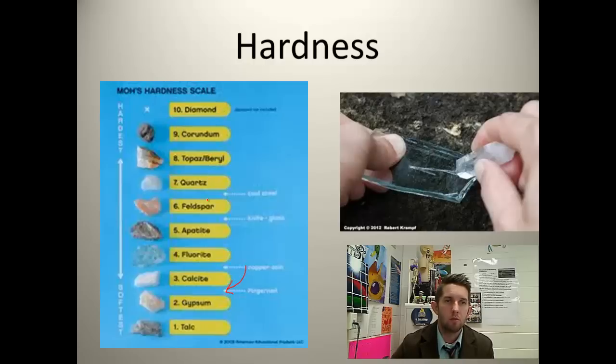Corundum, topaz, quartz, feldspar. Talc will get scratched by all of these. So it's kind of in succession. Diamond will scratch corundum. Corundum will scratch topaz. Topaz will scratch quartz, etc. The harder it is, the higher it's going to be on the Mohs hardness scale.